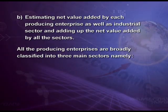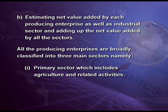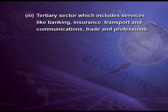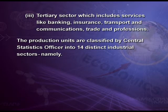All the producing enterprises are broadly classified into three main sectors: the primary sector, which includes agriculture and related activities; the secondary sector, which includes manufacturing units; and the tertiary sector, which includes services like banking, insurance, transport, communication, trade and professions. The production units are classified by the Central Statistics Officer, CSO, into 14 distinct industrial sectors.